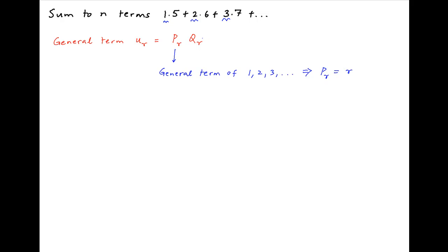Similarly, Q_R is the rth term of the series 5, 6, 7 and so on. And therefore, the rth term Q_R is equal to R plus 4.